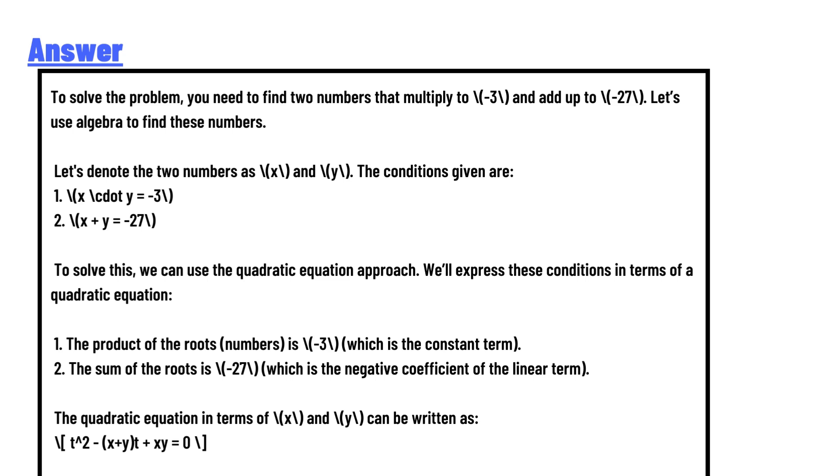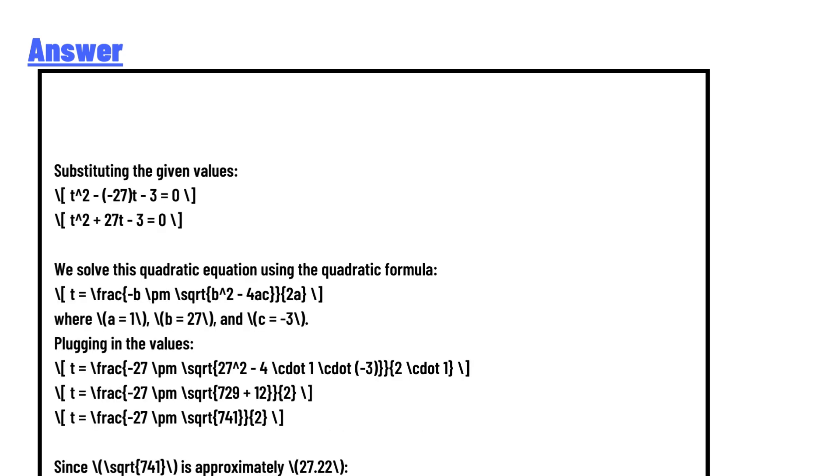Let's denote the two numbers as x and y. The conditions given are: x times y equals negative 3, and x plus y equals negative 27. To solve this, we can use a quadratic equation approach.